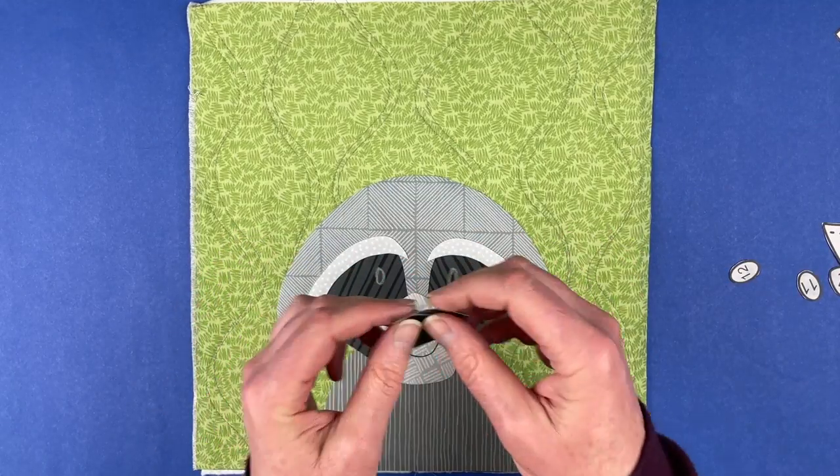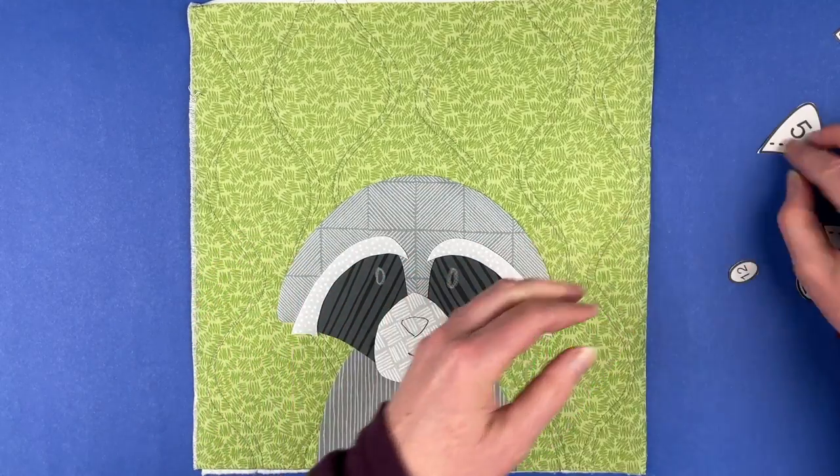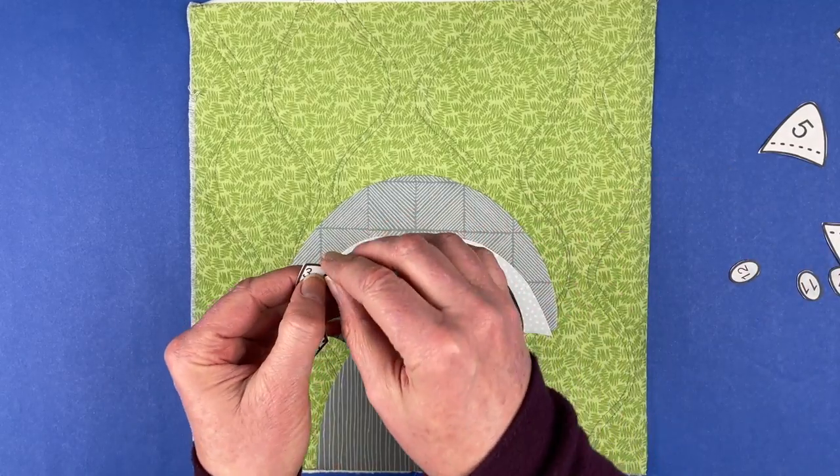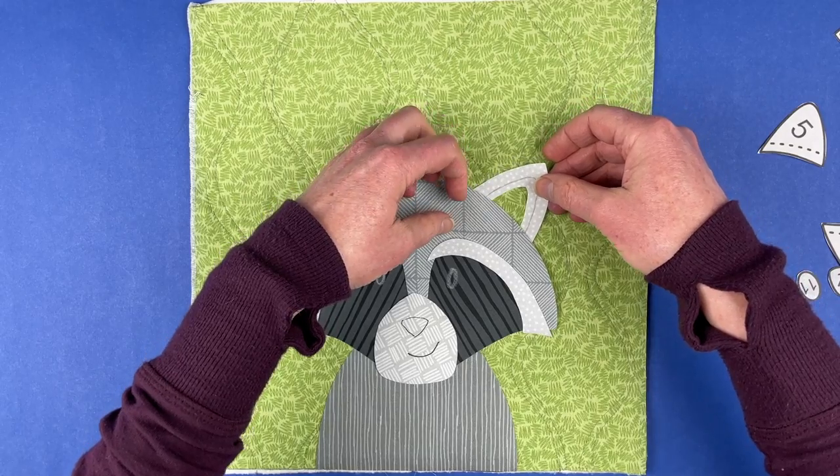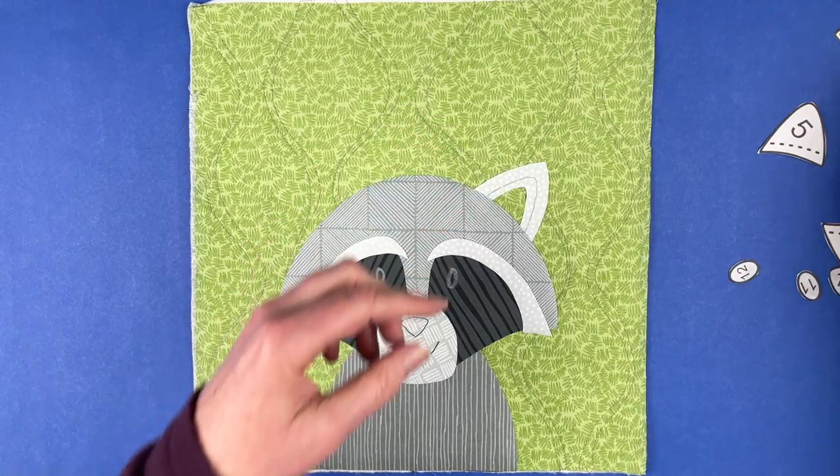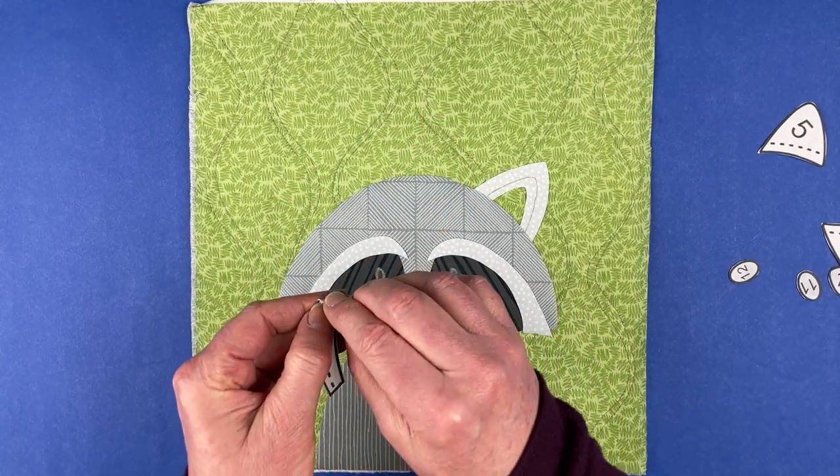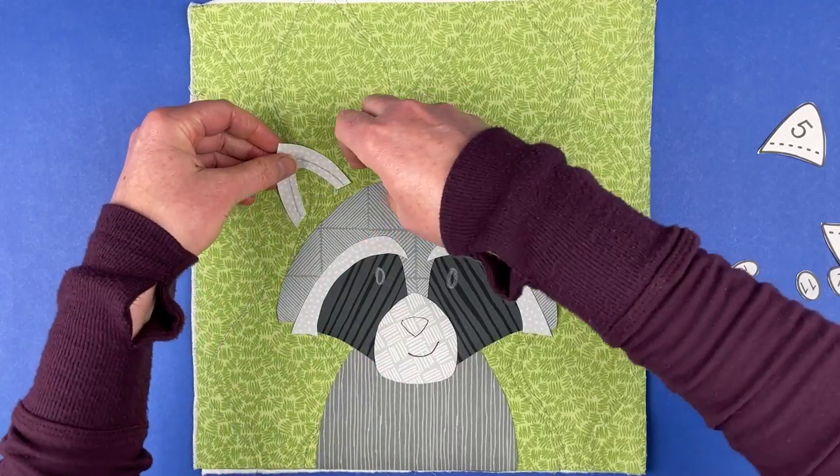Just shifting those pieces around. All right. Now we've got some big, you know what, I need to do the outer ears first. So we've got some bigger outer ear pieces. And we're going to tuck behind the head here.